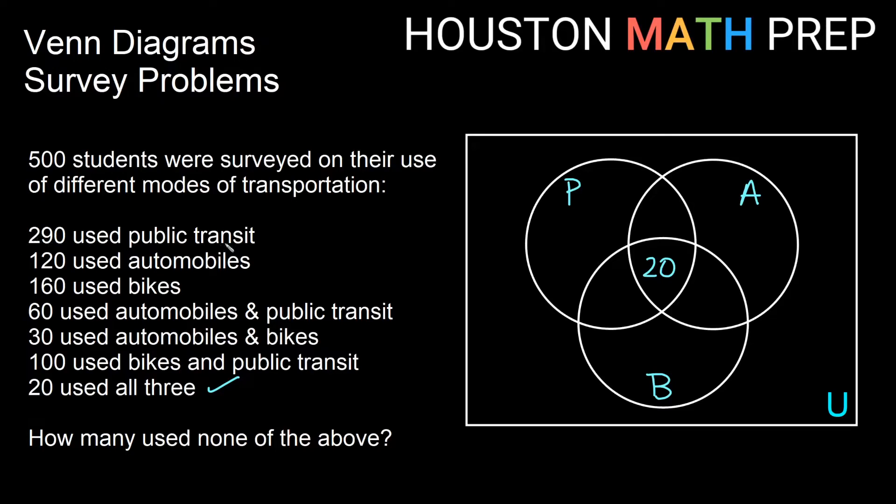But in this case, if we scroll all the way to the bottom, we can notice that 20 used all three. So 20 of them used public transit, automobiles, and bikes. So that will go in the intersection of all three circles, those 20 people. If I try to go back up and use my 290, you notice that I still have three regions of P, and I can't use that 290 yet. But if I look at some of these where it says I used, for example, automobiles and public transit, then we're talking about the zone where A and P circles overlap, right? We're looking at that. And since I already know 20 people go here, and a total of 60 must be in the overlap of circles A and P, how many would I put here to get a total of 60 in there? I would put 40 more, because I'll have 40 plus 20 equals the 60, and now we've used the 60.